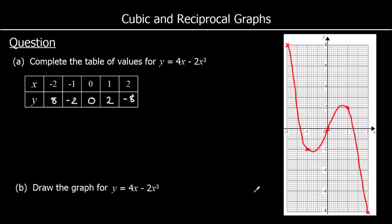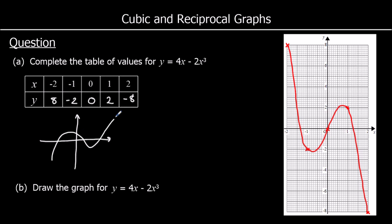So a negative x cubed graph comes down from the top left to the bottom right, and a positive x cubed graph comes from the bottom left to the top right. A graph going up is a positive x cubed, and a graph going down is a negative x cubed.